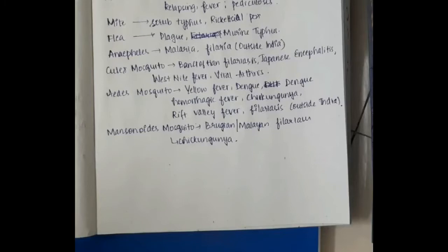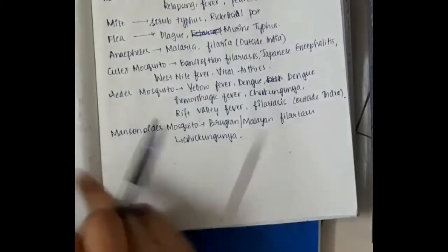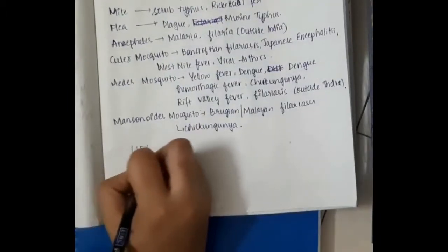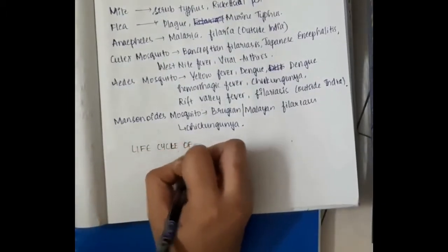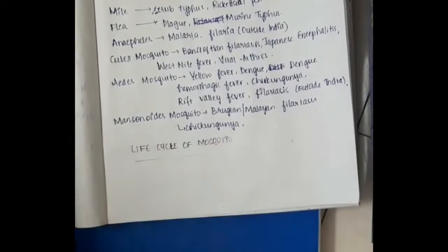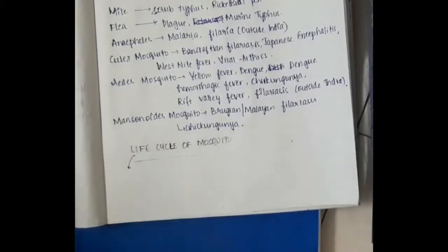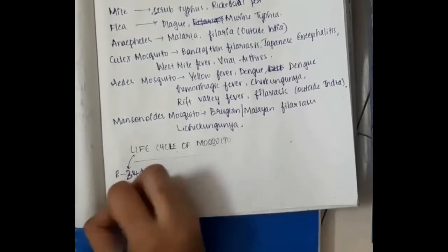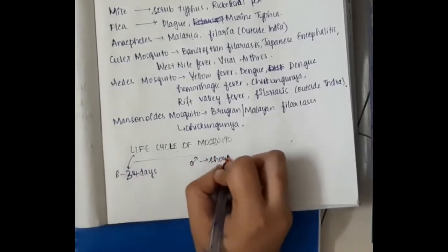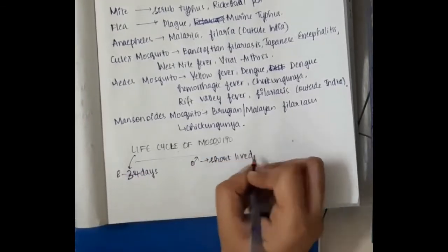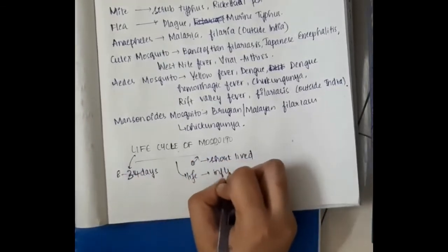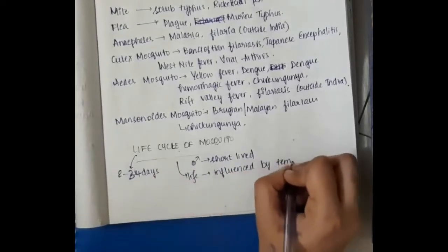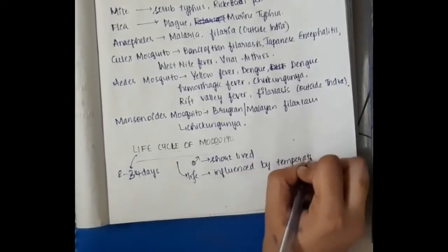Hello friends, let us now learn some important points about the life cycle of mosquito. The life cycle of mosquito is around 8 to 34 days. In males, it is short-lived and the life is mainly influenced by temperature and humidity.